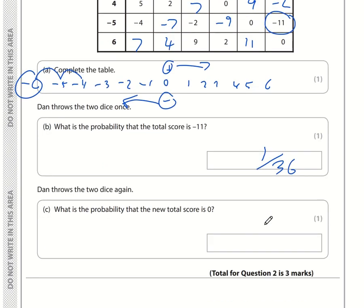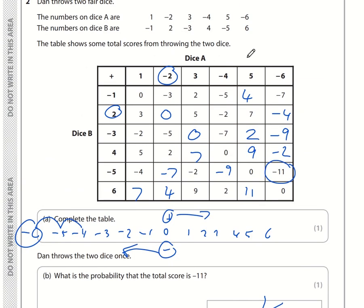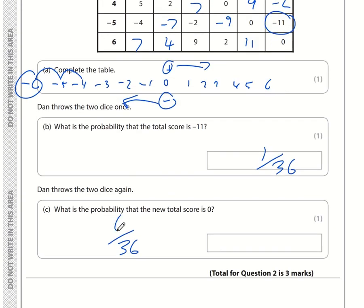Part C: What is the probability that the total score is 0? We know there's 36 in total. How many zeros are there? It's on this diagonal: 1, 2, 3, 4, 5, 6. So that is 6 out of 36. Both numbers are in the 6 times table, so we can simplify. 6 divided by 6 is 1, 36 divided by 6 is 6. The probability is 1 sixth.